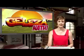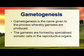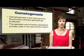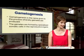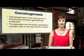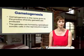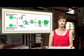The gametes are formed by specialized somatic cells in the reproductive organs. It's very important that you remember somatic cells are body cells and they are diploid cells — 2N. These diploid cells are going to create haploid gametes.